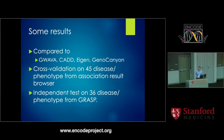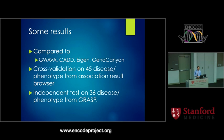For results, we compared to four different methods: GRASP, CADD, CDD, Eigen, and Genome Canyon. We used cross-validation on 45 different disease phenotypes from the GWAS results browser, and also conducted an independent test on 36 disease phenotypes from GRASP, another GWAS database.